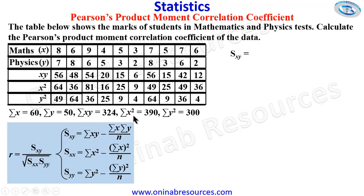Sigma X is 60 and Sigma Y, so we have 60 times 50, then over N.